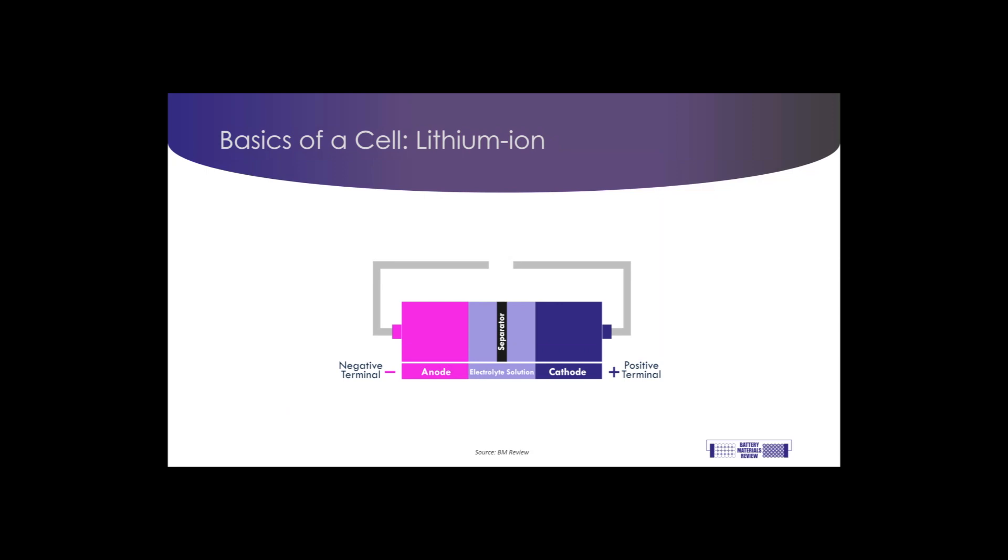The lithium ion cell therefore works by splitting lithium atoms into lithium ions and electrons, which flow between the positive and negative terminals. The electrons flow around the circuit, while the ions cross between the negative and positive terminals through the separator.